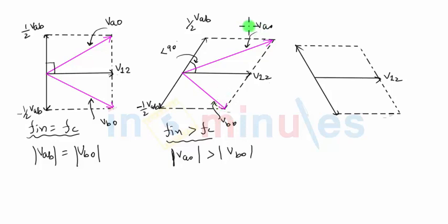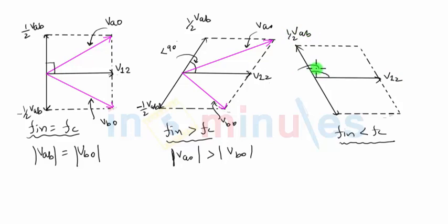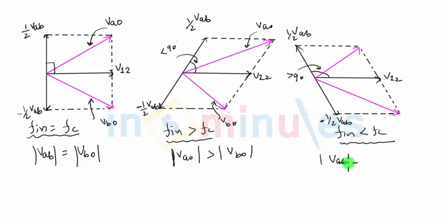Adding those secondary voltages with the primary voltage V12 generates voltages in the first and second halves of the secondary which are different in magnitude. The third case is when Fn is less than Fc. The phase difference between V12 and half VAB will be greater than 90 degrees. Minus half VAB is exactly opposite to half VAB. Drawing the resultant, it is clear that the magnitude of VAO is less than the magnitude of VBO.